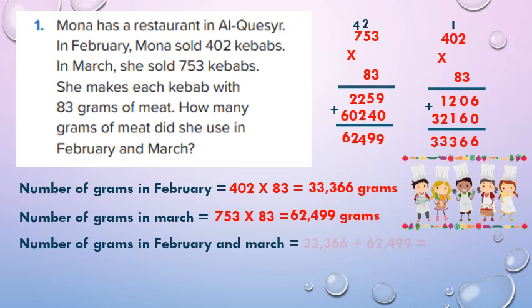Number of grams of meat in February and March — add the 2 results: 33,366 plus 62,499. 6 plus 9 equals 16, carry 1. 7 plus 9 equals 16, carry 1. 1 plus 4 plus 1 plus 3 equals 8. 3 plus 2 equals 5. 3 plus 6 equals 9. So she used 95,865 grams in two months.